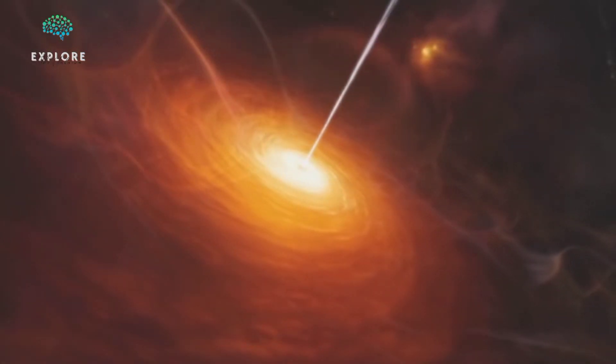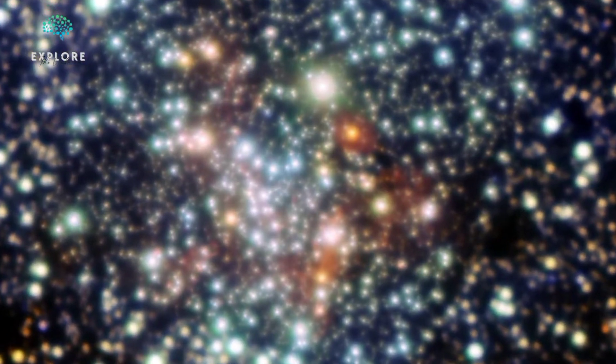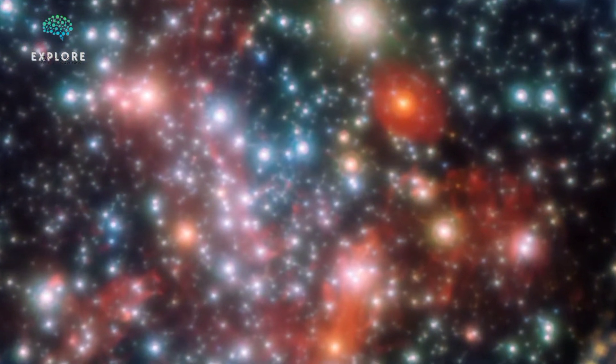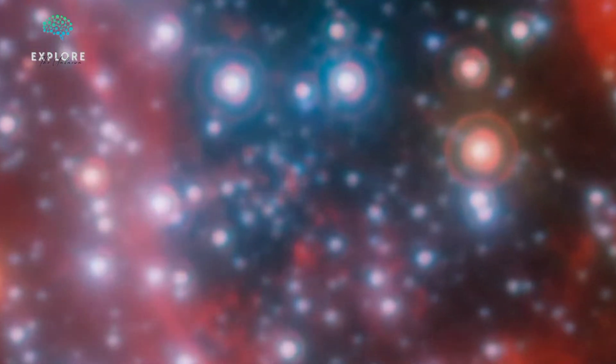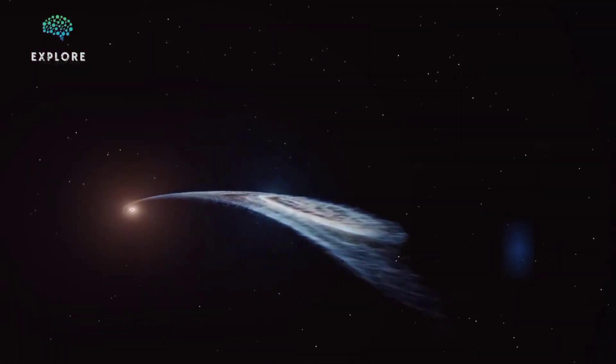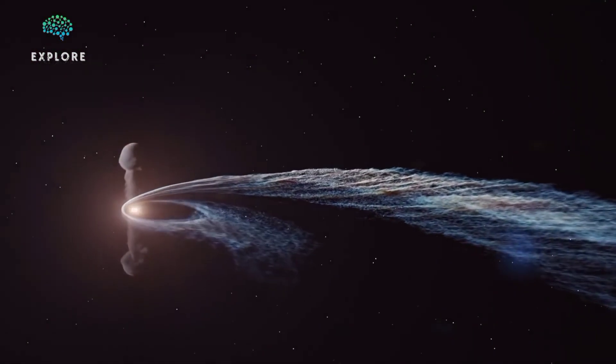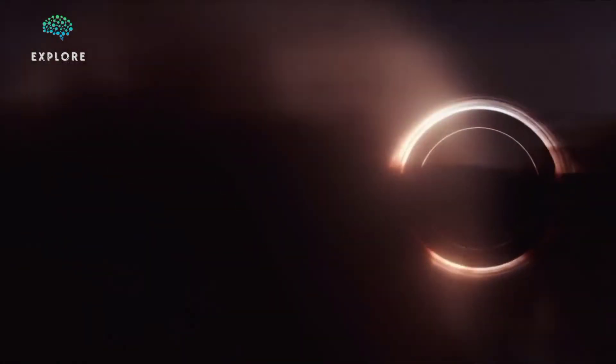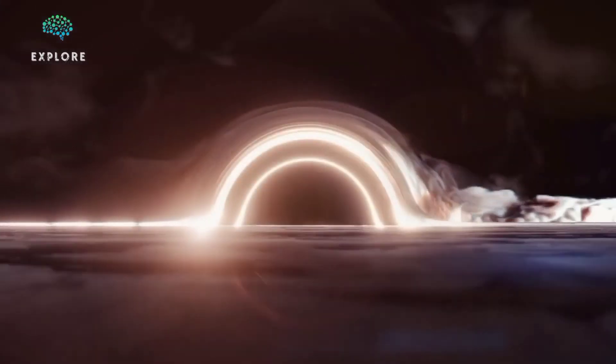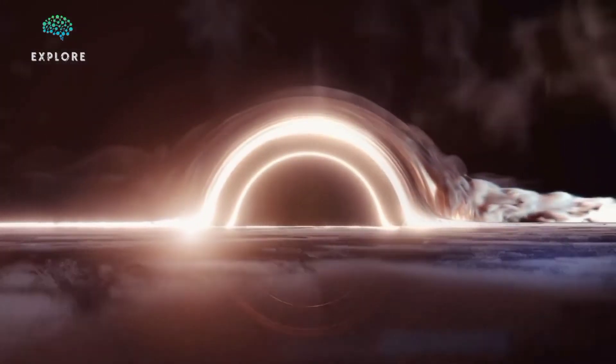Active galaxies, such as Seyfert galaxies and radio galaxies, emit intense radiation. In a Seyfert galaxy, this radiation comes from the galactic nucleus. In a radio galaxy, it also comes from huge lobes on either side of the galaxy. The radiation from active galaxies and quasars is thought to be caused by material falling into central black holes.